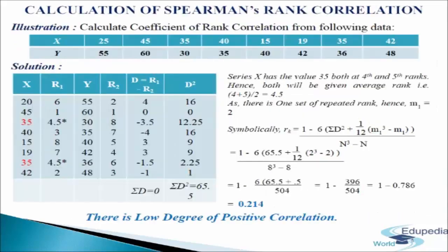Now let us understand when ranks are repeated with the following illustration. We have to calculate the rank coefficient of correlation from the given data of x and y. We make a table of 6 columns. In the first column we write x: 25, 45, 35, 40, 15, 19, 35, and 42. In the second column we write r1, assigning ranks from the highest: 45 gets rank 1, 42 gets rank 2, 40 gets rank 3. Since 35 appears twice, both get the common rank 4.5. Then 25 gets rank 6, 19 gets rank 7, and 15 gets rank 8. In the third column we write y: 55, 60, 30, 35, 40, 42, 36, and 48.